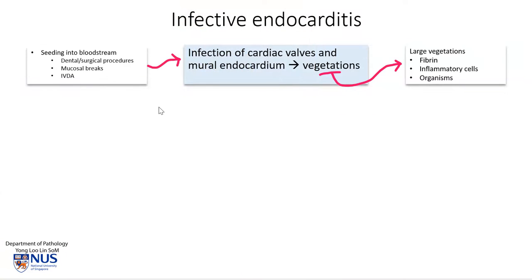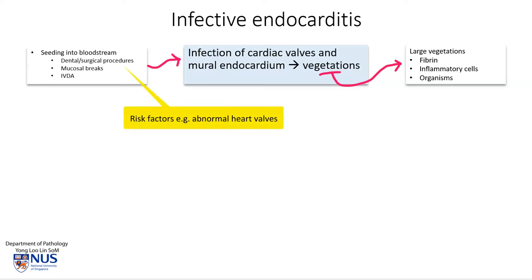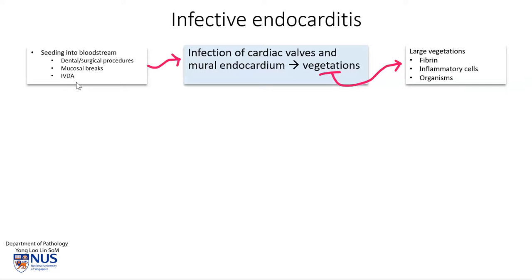This is caused by the seeding of organisms into the bloodstream, which can be secondary to dental or surgical procedures. Hence, in patients who have underlying risk factors for developing infective endocarditis, prophylactic antibiotics are sometimes useful. There may also be mucosal breaks or breaks in the skin, and intravenous drug abusers are at higher risk.